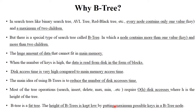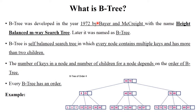B-tree was developed in 1972 by Bayer and McCreight with the name 'height-balanced m-way search tree,' where m means order. Later its name became B-tree. B-tree is a self-balancing search tree where every node contains multiple keys — keys means values — and it has more than two children. The number of keys in a node and the number of children for a node depends on the order of the B-tree.